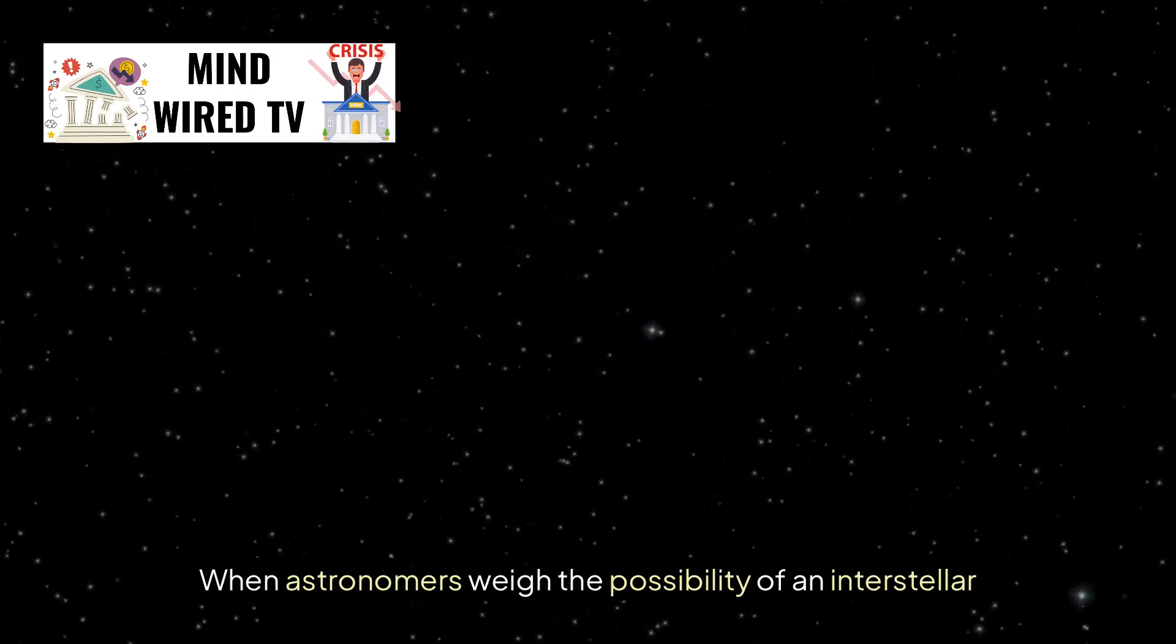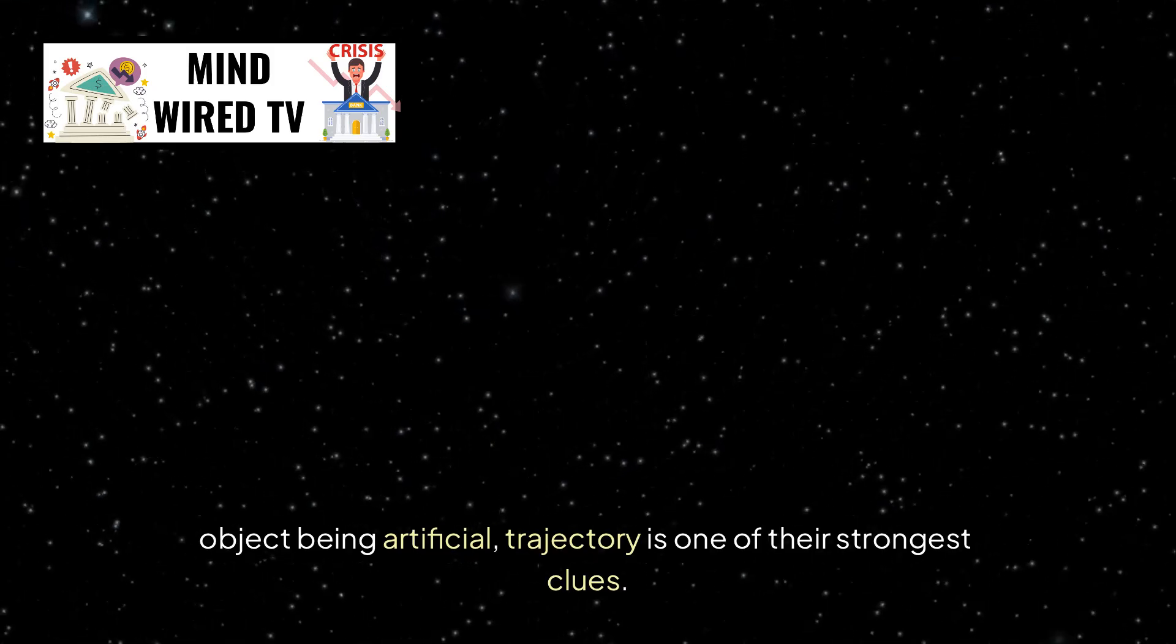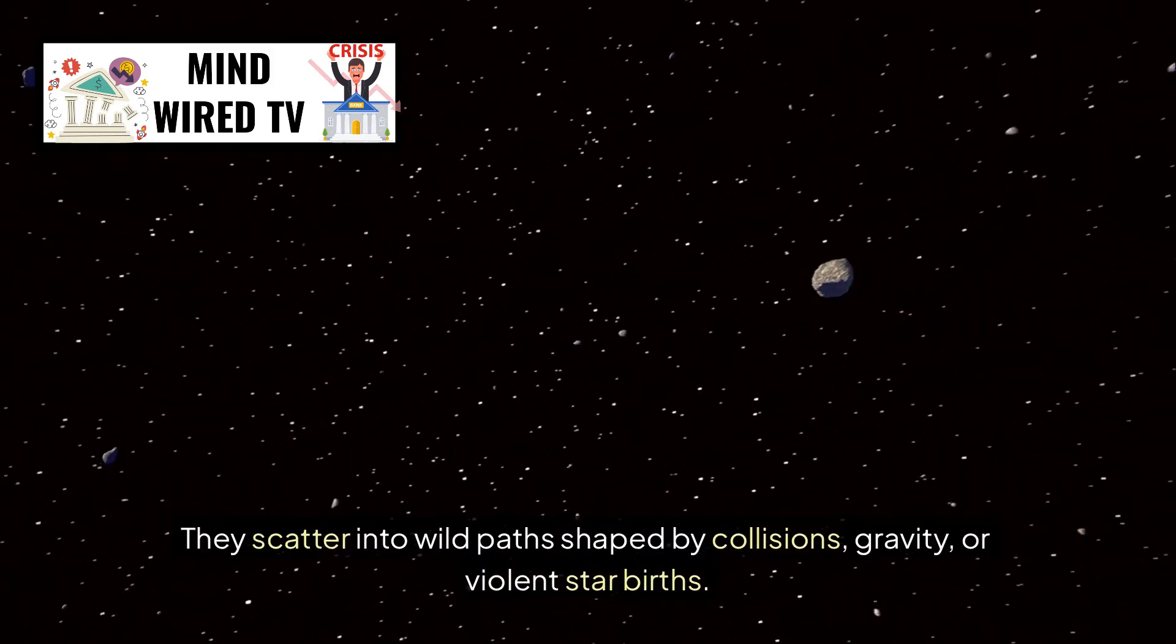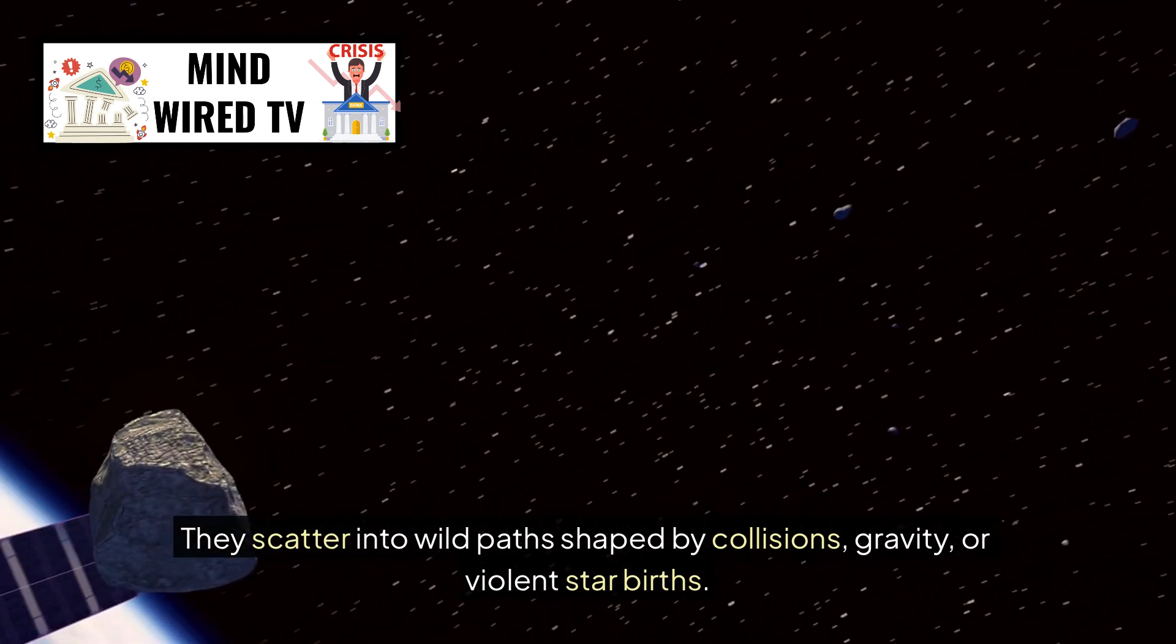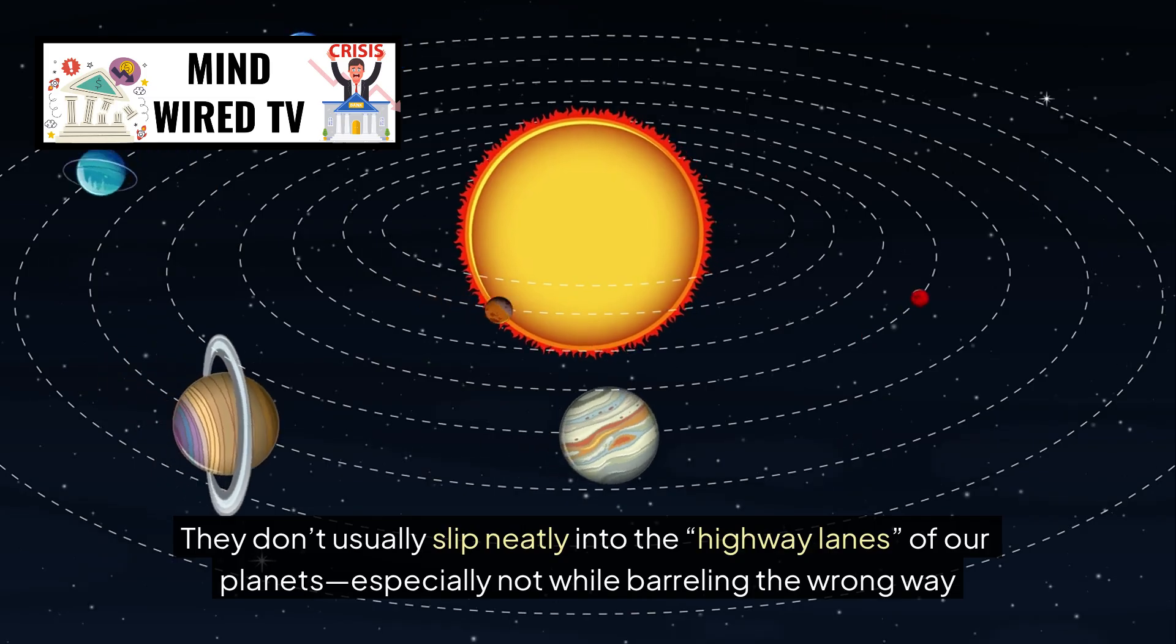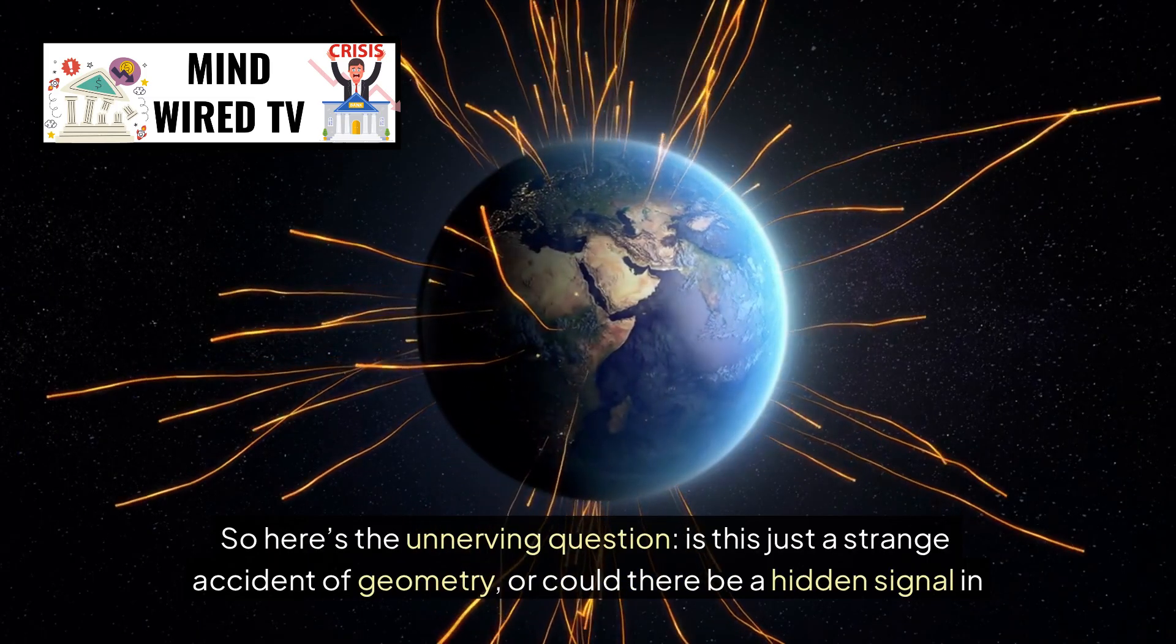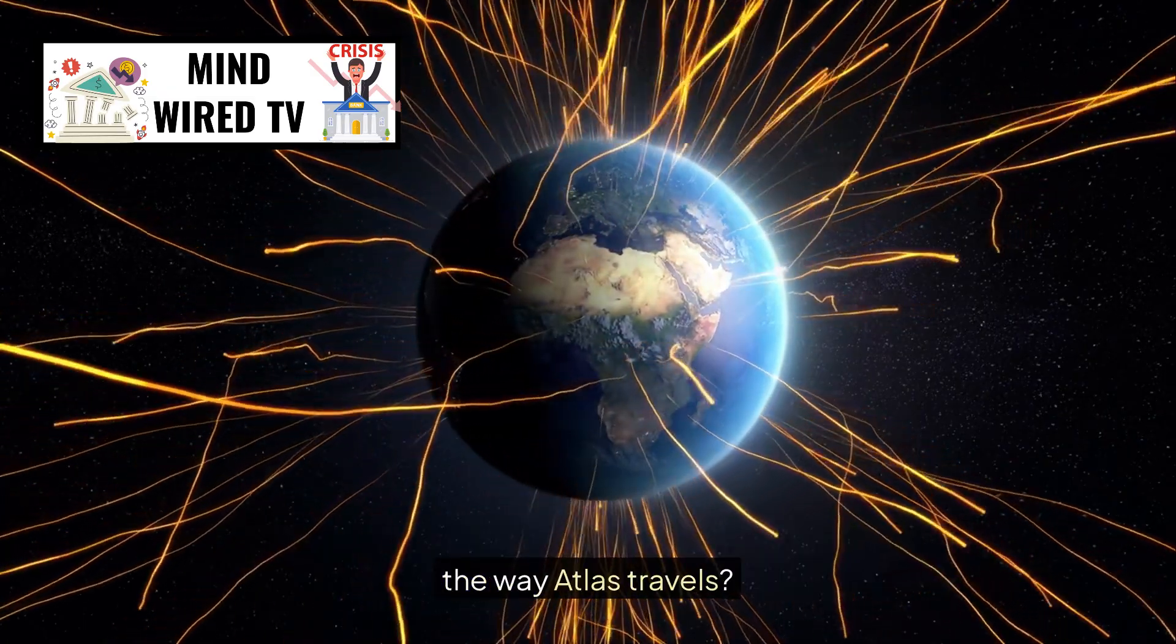When astronomers weigh the possibility of an interstellar object being artificial, trajectory is one of their strongest clues. Random chunks of rock are messy. They scatter into wild paths shaped by collisions, gravity, or violent star births. They don't usually slip neatly into the highway lanes of our planets, especially not while barreling the wrong way down the road. So here's the unnerving question. Is this just a strange accident of geometry, or could there be a hidden signal in the way Atlas travels?